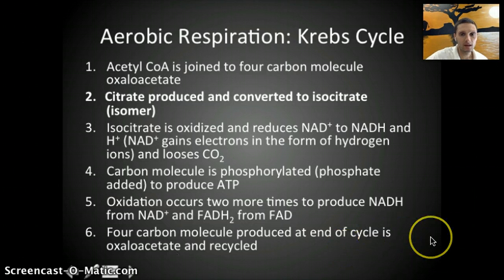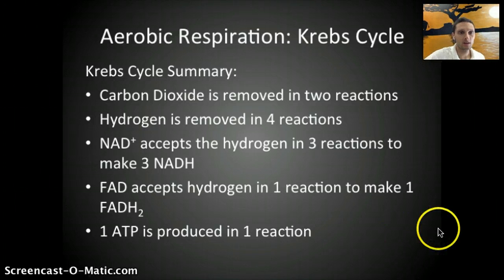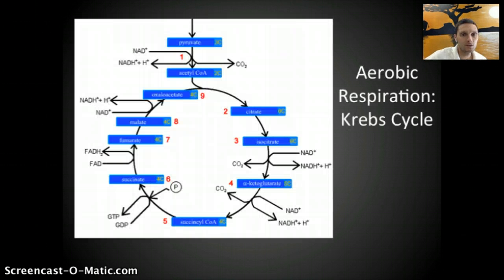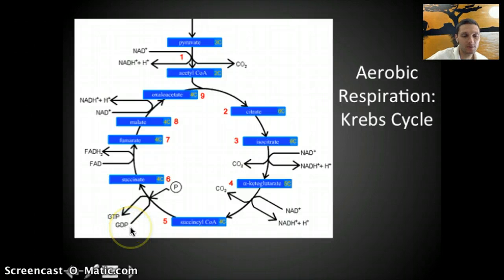Looking at the Krebs cycle as a whole and as a summary: carbon dioxide is removed in two reactions, so two CO2 molecules are released — which makes sense since we start with a six-carbon molecule and end with oxaloacetate, a four-carbon molecule. Hydrogen is removed in four reactions: NAD+ accepts three hydrogen ions to make three NADH, and FAD accepts one hydrogen to make one FADH2. A single ATP is produced in one reaction. A simplified diagram shows all of this, including the production of FADH2, three NADH, and two CO2 molecules, with GDP representing ATP.